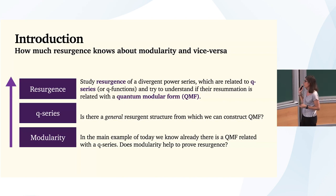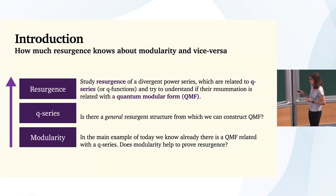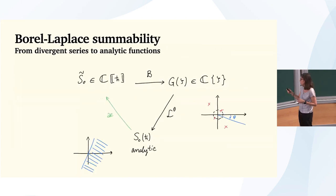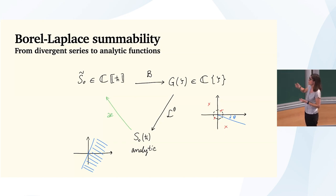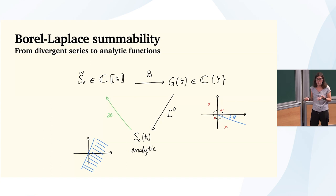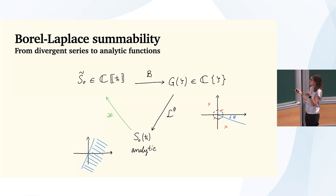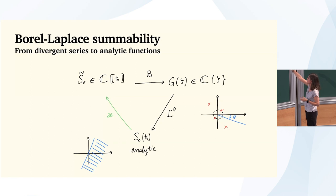Before going to the example, I would like to briefly recall some ideas related to resurgence and Borel summability. As we have already seen in this workshop several times, very often we deal with divergent series. What we would like to do is extract some analytic function out of something that behaves not nicely — in particular, a series whose coefficients typically grow factorially fast. The first thing you can do when you encounter these divergent series is to apply a Borel transform, which is a purely formal procedure that divides out your divergence. This typically gives you a germ of analytic function in the variable zeta, so you are in what is called the Borel plane.